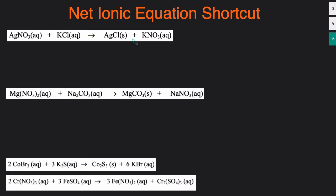The very first step is just to make sure that the reaction is balanced. We'll start with this first one. Everything's already balanced — you can see there's one H on the left and right, one nitrate on the left and right, one K on the left and right, and one Cl on the left and right. I'm going to assume you already know how to balance a reaction, so I'm not going to go into that in too much detail.